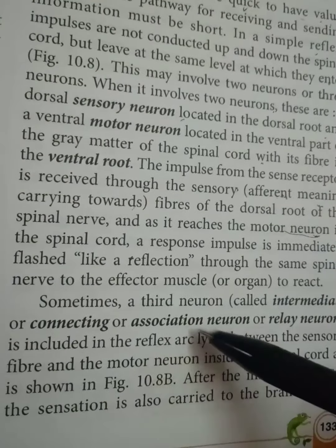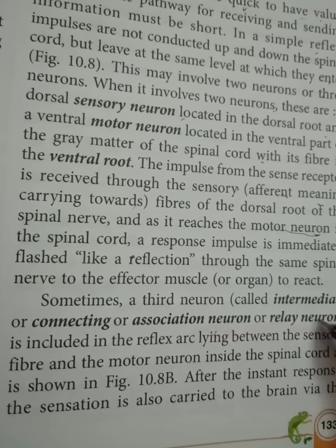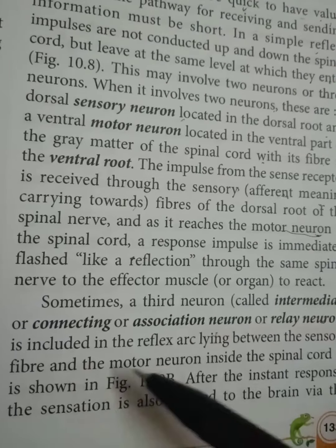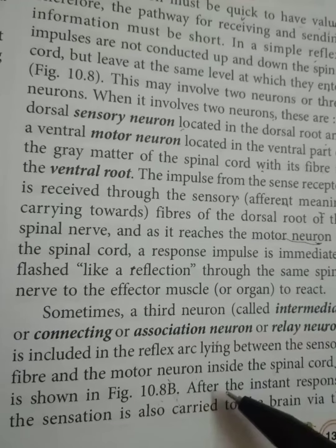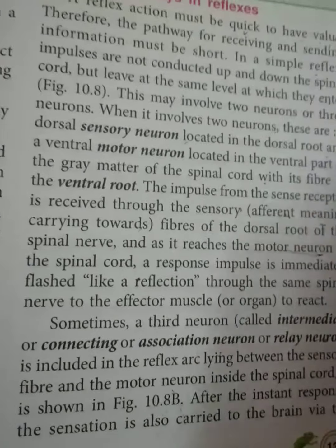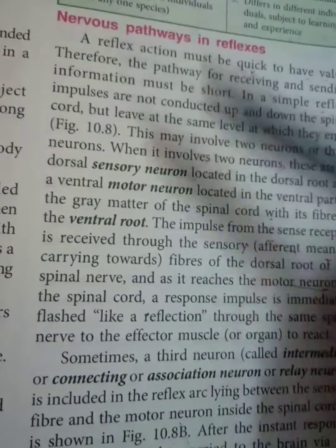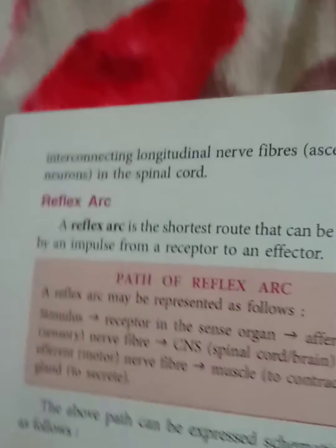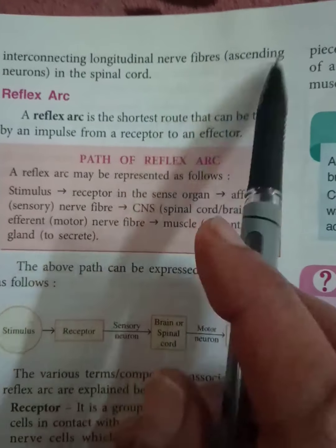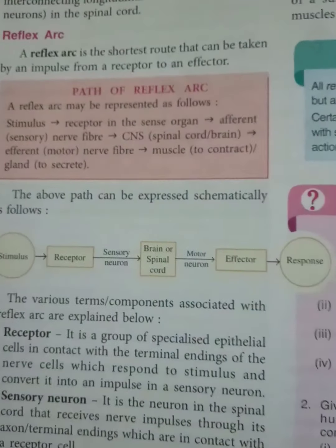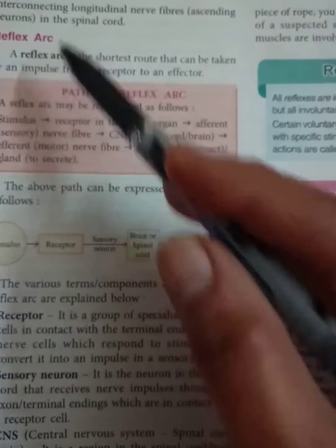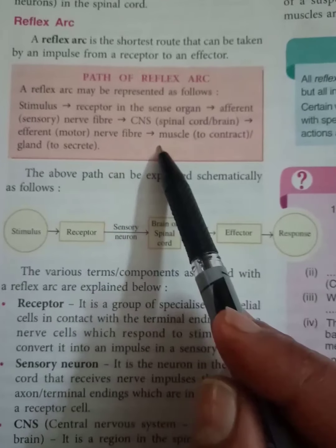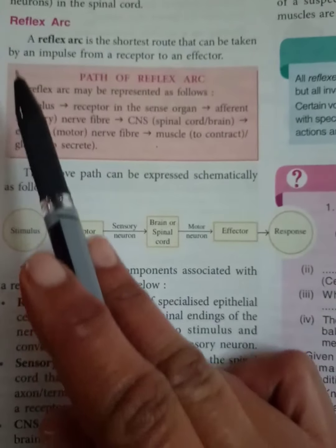Sometimes a third neuron — the intermediate, connecting, association, or relay neuron — is included in the reflex arc, lying between the sensory fiber and motor neuron inside the spinal cord, as shown in diagram 10.8b. After the instant response, the sensation is also carried to the brain via ascending nerve fibers in the spinal cord — so the brain gets information, but only after the complete act is done. The reflex arc is very important for definitions, and they may give you jumbled words and ask you to arrange them in proper sequence.